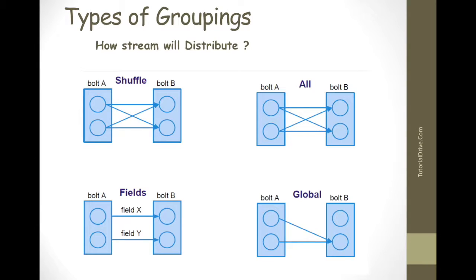A stream grouping tells a topology how to send tuples between two components. Remember, spouts and bolts execute in parallel as many tasks across the cluster. If you look at how a topology is executing at the task level, it looks something like what you can see on the diagrams here. So we have different types of groupings.